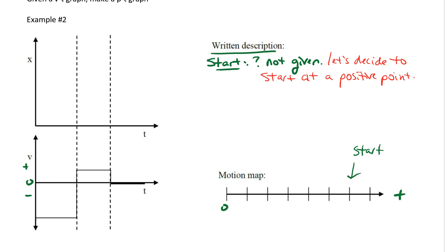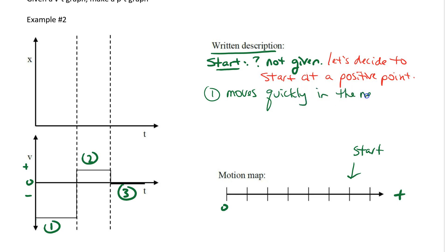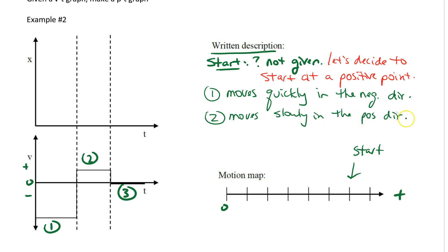So let's just decide to do that. If we do our familiar segments — segment 1, segment 2, and segment 3 — we can say for segment 1 it moves quickly in the negative direction. Then between 1 and 2 it changes direction and moves slowly in the positive direction. Closer to the origin is slow, farther from the origin is fast — that's how the slowly and quickly works. Part 3: stopped, not moving.